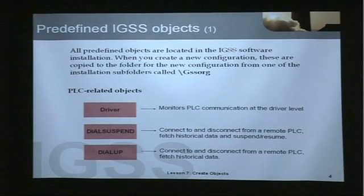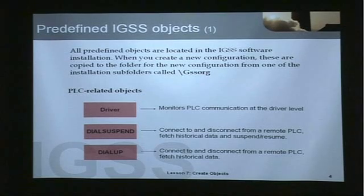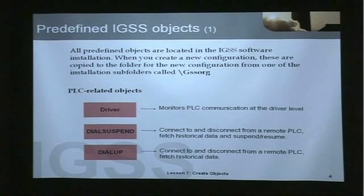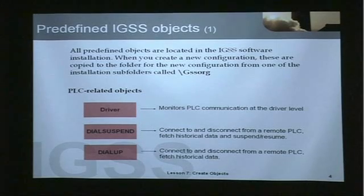What we're going to look at now are some predefined IGSS objects, which are not directly related to process components in the configuration. All predefined objects are located in the IGSS software installation. When you create a new configuration, these are copied to the folder for the new configuration from one of the installation subfolders called /GSSORG.